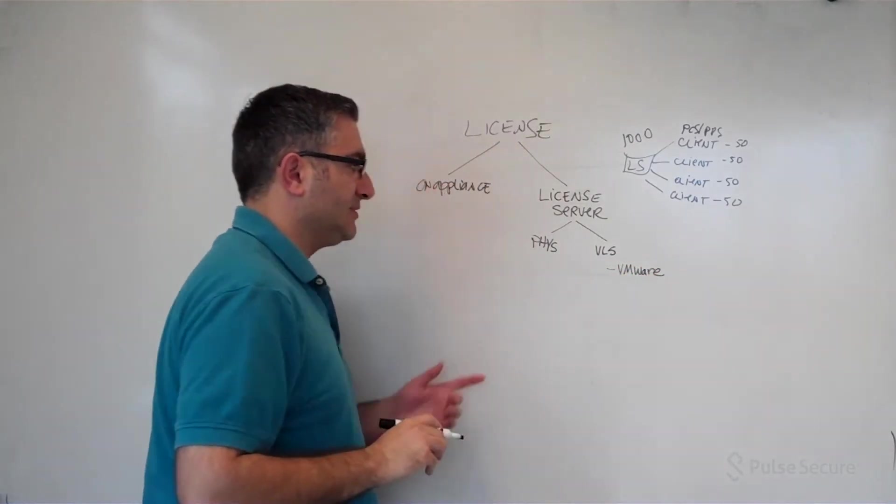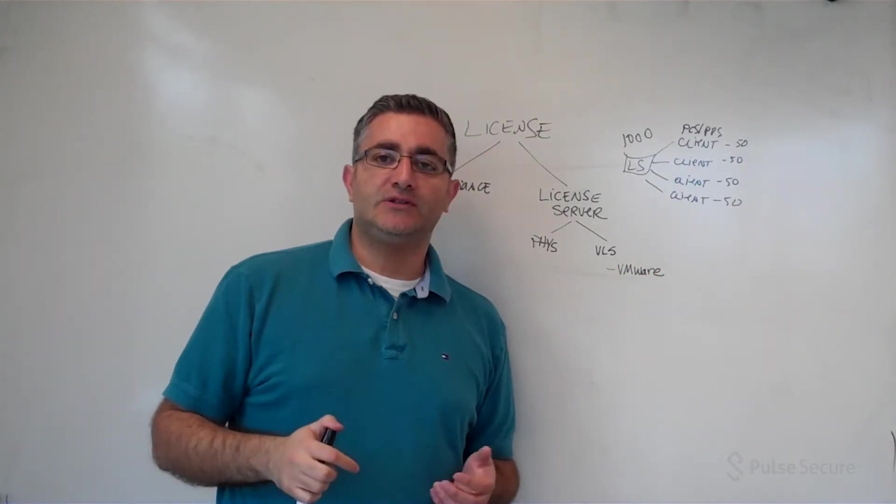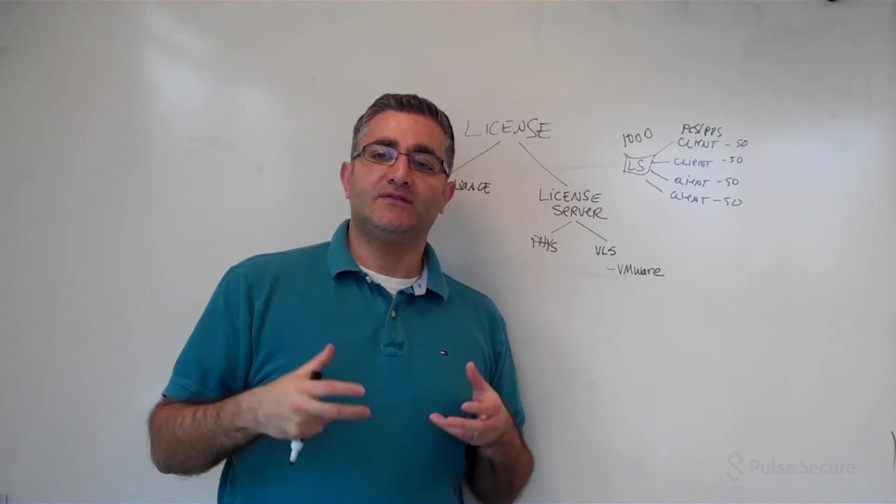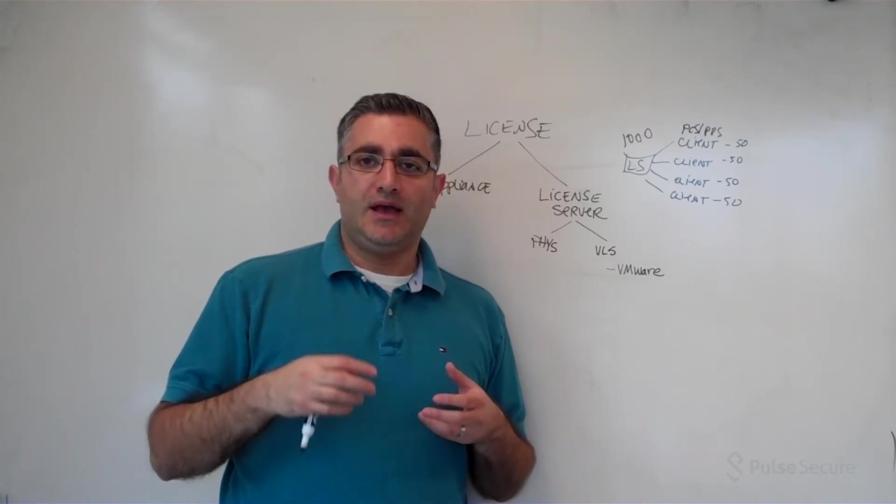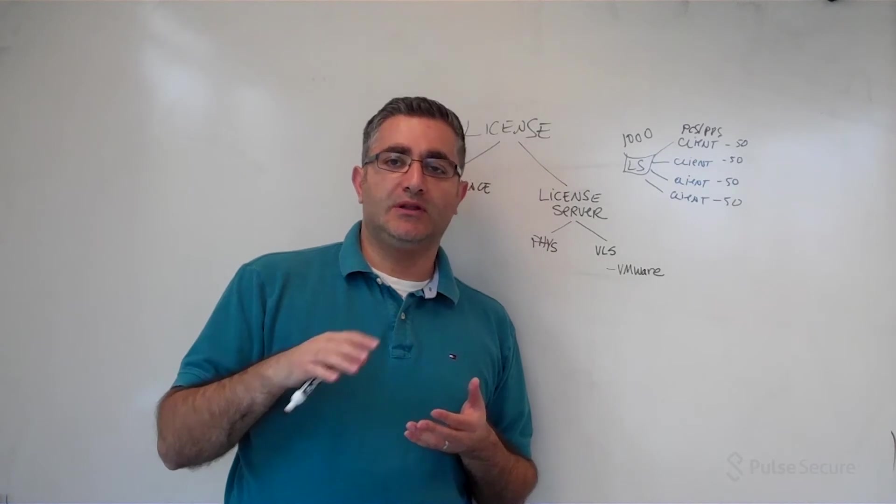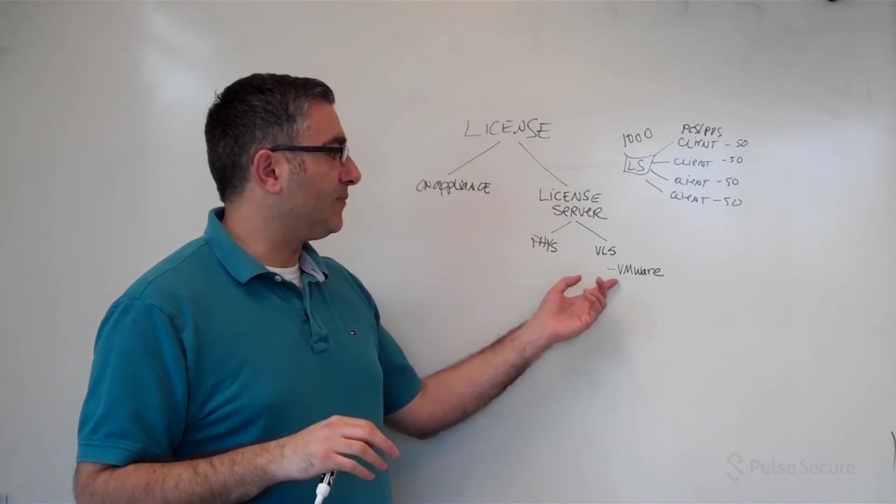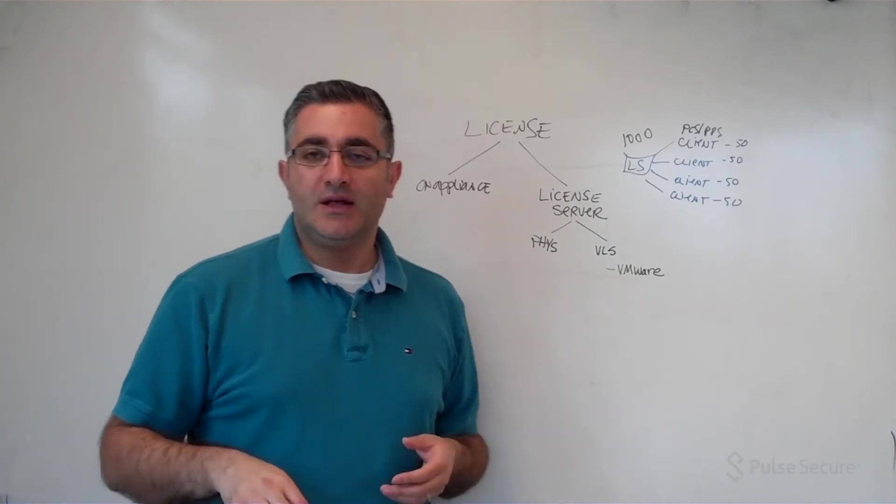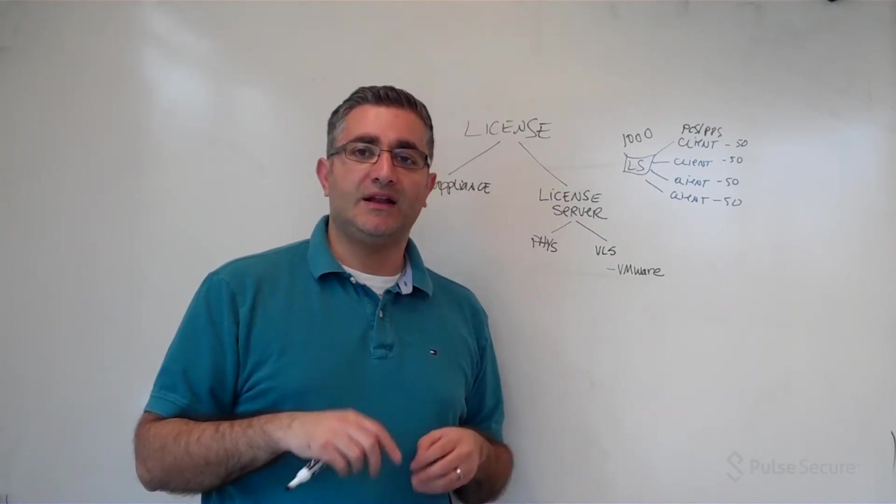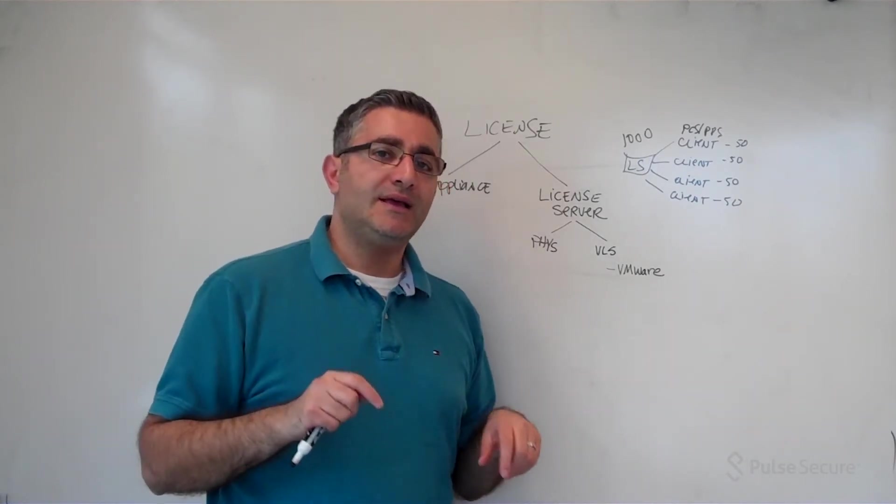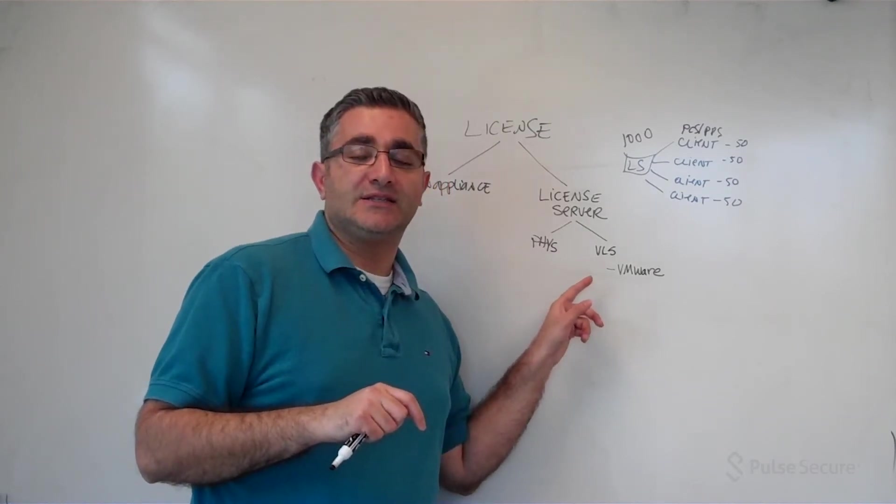What actually happens is as part of the virtual license server, we have to tie it to hardware somehow. Right now what we're doing is making some low-level VMware calls to check on things on the VMware hypervisor so that we can create a virtual hardware ID and tie all the licenses to that.